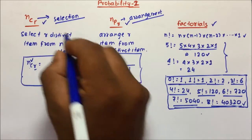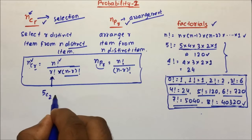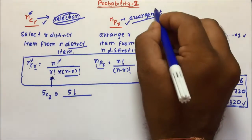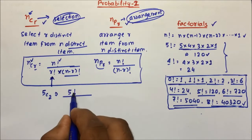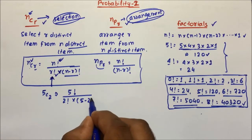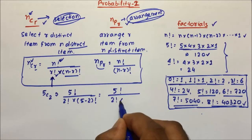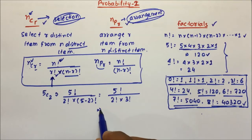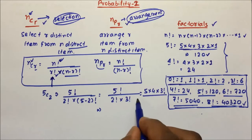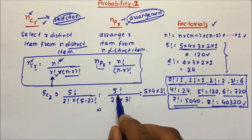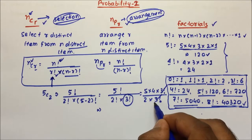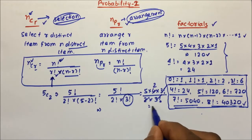All N distinct items means all items are different. Now let us take one example: calculate 5C2. So 5C2 means 5 factorial divided by 2 factorial into 5 minus 2 factorial, which is 5 factorial divided by 2 factorial into 3 factorial. Now I expand 5 factorial as 5 into 4 into 3 factorial, so that 3 factorial in the numerator and denominator cancel. Then 2 factorial equals 2, so 5 into 4 divided by 2 gives us 10. So 5C2 equals 10.